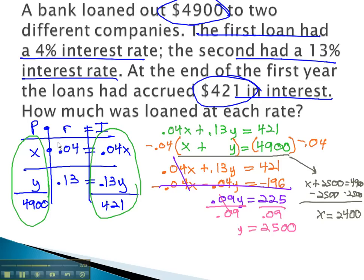Clearly labeling our answers, x is the amount that is at 4%. We've got 2400 dollars invested at 4%.